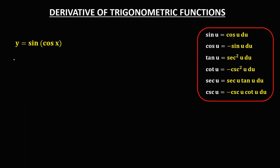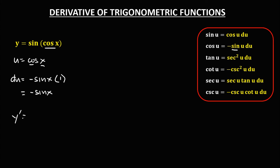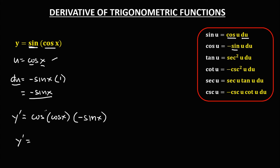Then for this given, so u is equal to cosine x. To find the derivative of u, the derivative of cosine is negative sine x, times the derivative of x, that's 1, so du equals negative sine x. To find now the derivative, since the derivative of sine is cosine u, so cosine of cosine x, times the derivative of u, which is negative sine x. So therefore y prime equals negative cosine of cosine x, times sine x.